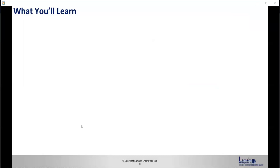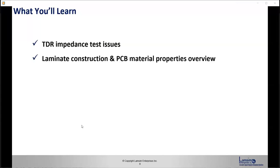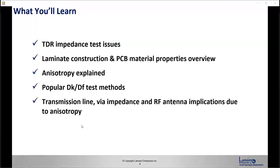So here's what we'll learn today. I'll start off talking about TDR impedance test issues. I'll go into laminate construction and PCB material properties and give an overview of that. I'll explain anisotropy. I'll discuss popular DK/DF test methods. Then I'll talk about transmission line impedance and RF antenna implications due to anisotropy. And finally, I'll give an example of dielectric anisotropic value issues.